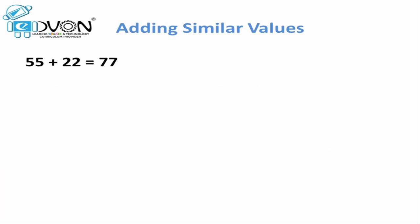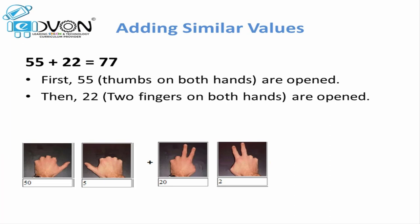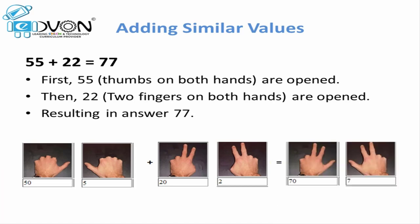Let's take another example. If we want to add 55 and 22 together: first, we place 55 by opening the thumbs on both hands. Now to add 22, we open two fingers on the left hand and two on the right. As a result, we get the thumb and two fingers on both hands, which represents the value 77. So our answer is 77.